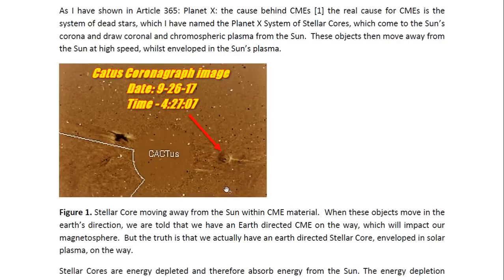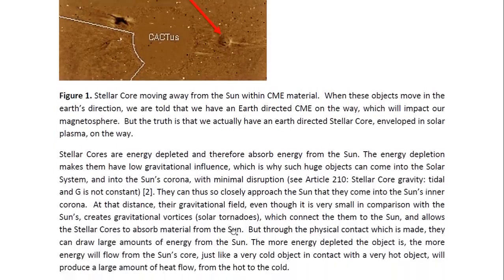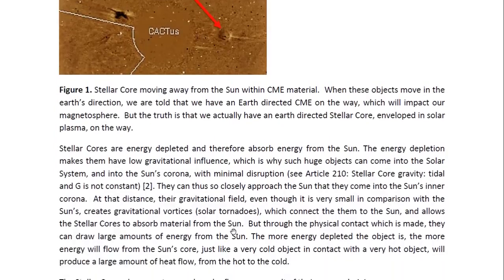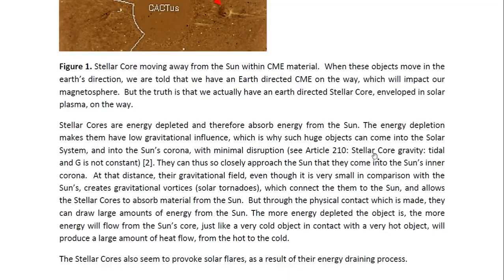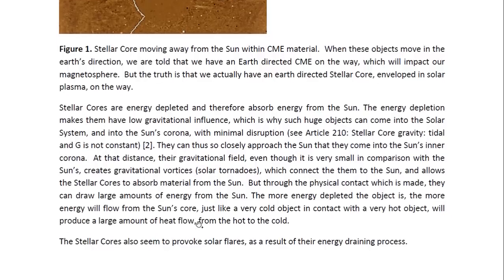When these objects move in the Earth's direction, we are told that we have an Earth-directed CME on the way, which will impact our magnetosphere. But the truth is that we actually have an Earth-directed stellar core enveloped in solar plasma on the way. Stellar cores are energy depleted and therefore absorb energy from the sun. The energy depletion makes them have low gravitational influence, which is why such huge objects can come into the solar system and into the sun's corona with minimal disruption. You may look at article 210 entitled 'Stellar Core Gravity, Tidal, and G is not constant.' They can thus so closely approach the sun that they come into the sun's inner corona.